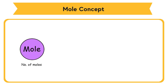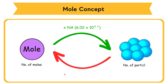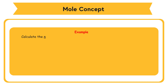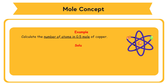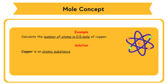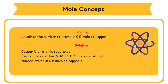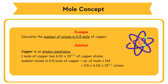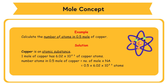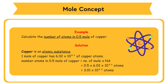Number of moles of a substance multiplied by Avogadro's number gives the number of particles. Number of particles divided by Avogadro's number gives number of moles of a substance. Example: Calculate the number of atoms in 0.5 mole of copper. Solution: Copper is an atomic substance. The number of atoms in 0.5 mole of copper = 0.5 × 6.02 × 10²³ = 3.01 × 10²³ atoms.